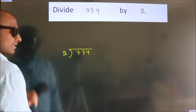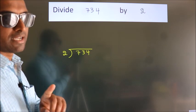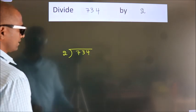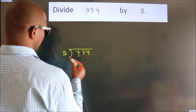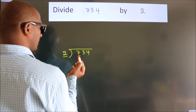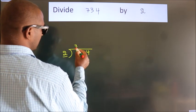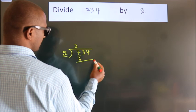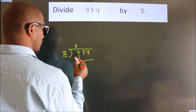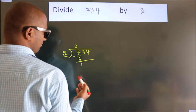This is your step 1. Next, here we have 7, here 2. A number close to 7 in 2 table is 2 times 3 is 6. Now, we should subtract, we get 1.